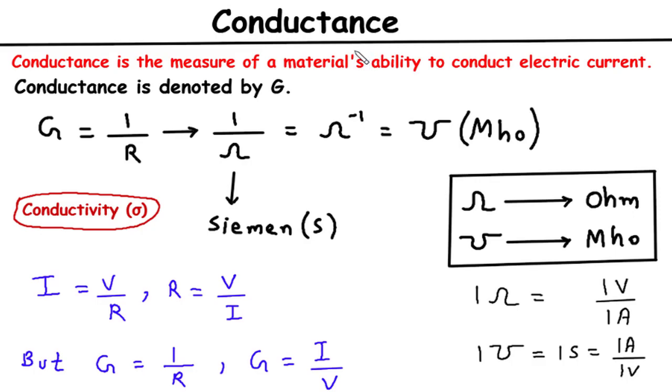So, let's dive right in. At its core, conductance refers to the measure of a material's ability to conduct electricity. It quantifies how easily electric current can flow through a given substance.